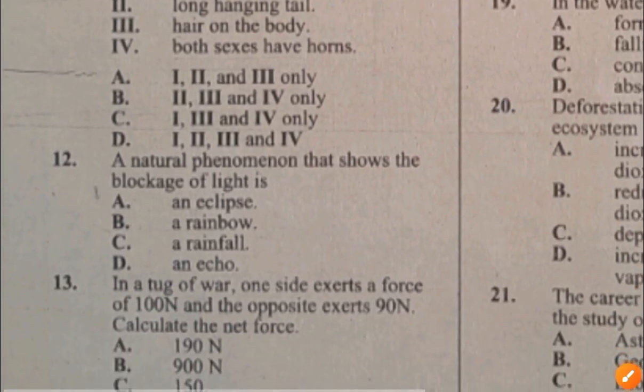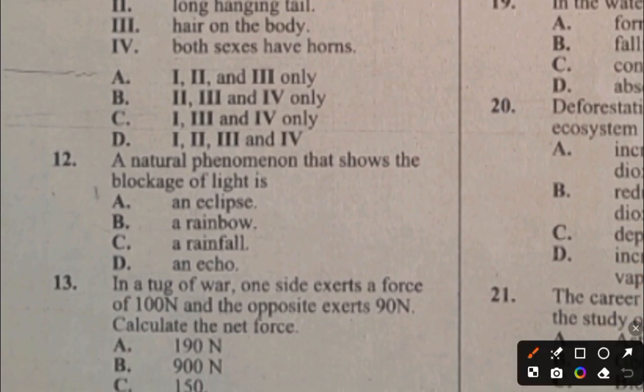Question 12. A natural phenomenon that shows the blockage of light is: A. Eclipse, B. Rainbow, C. Rainfall, D. Echo. The answer to question 12 is A, eclipse.